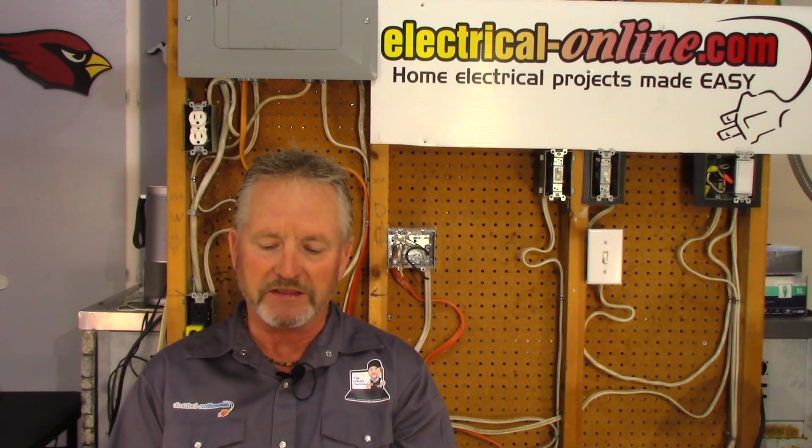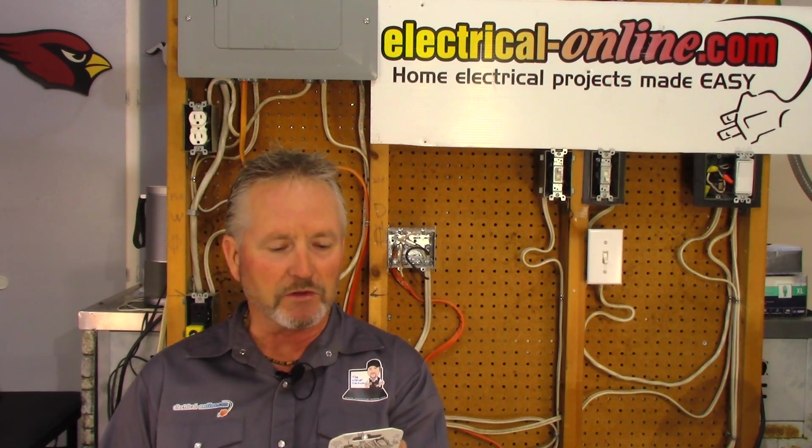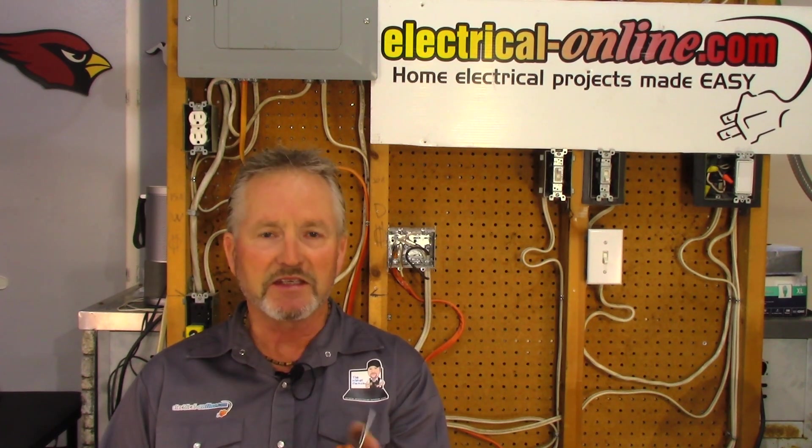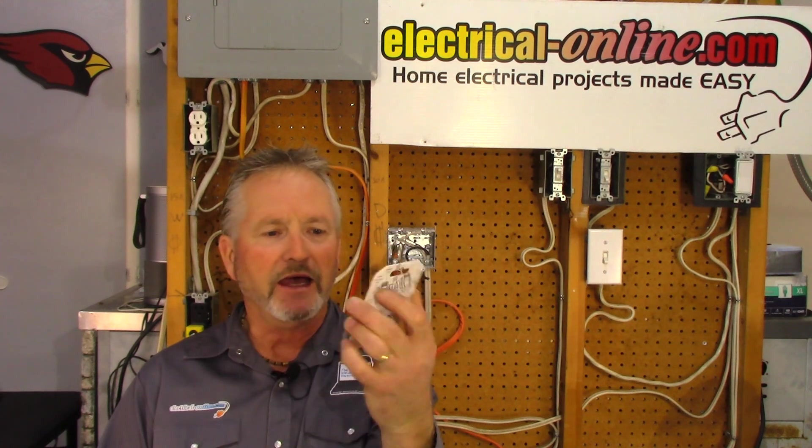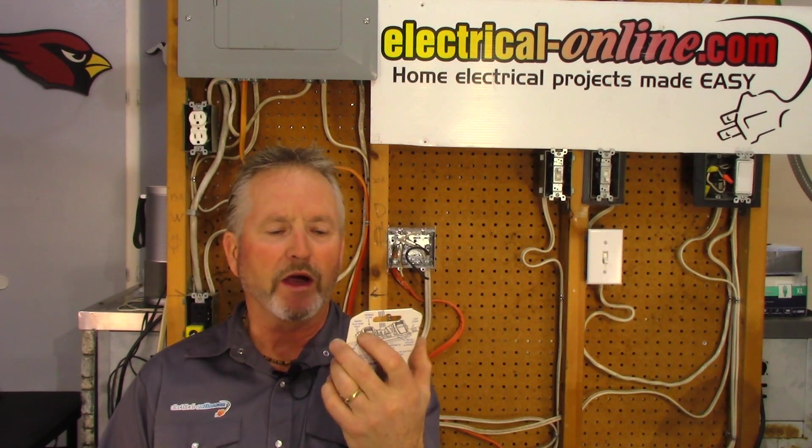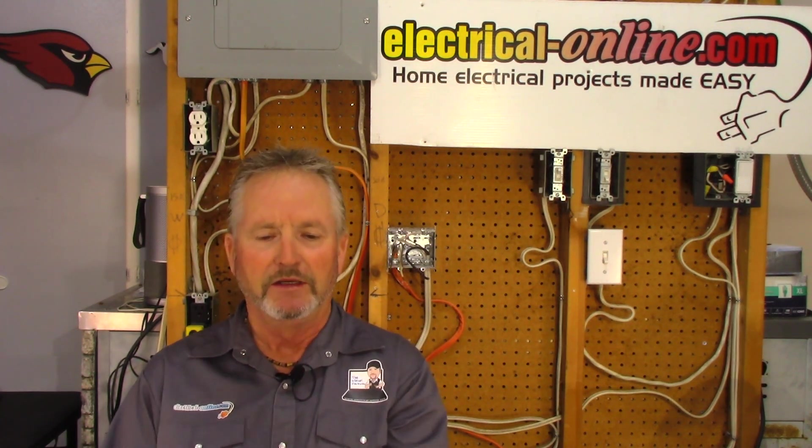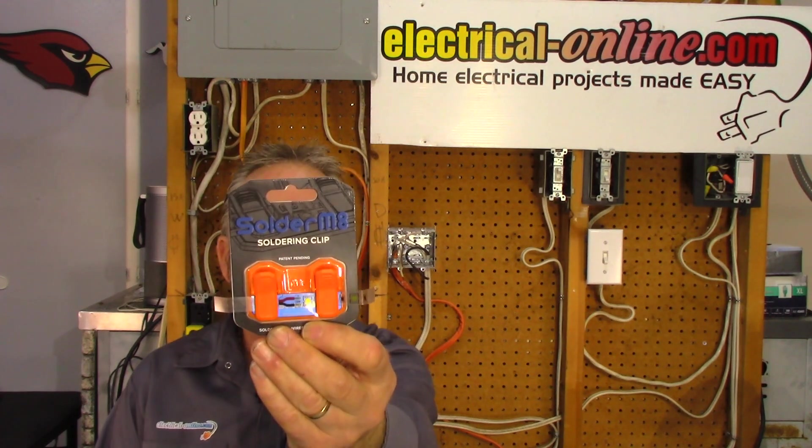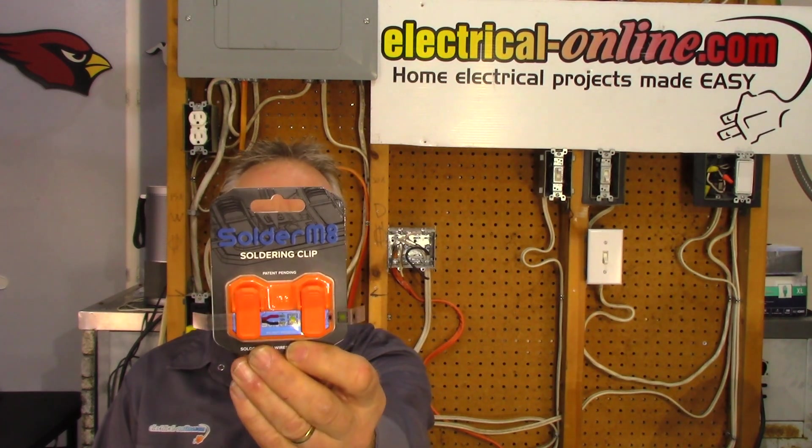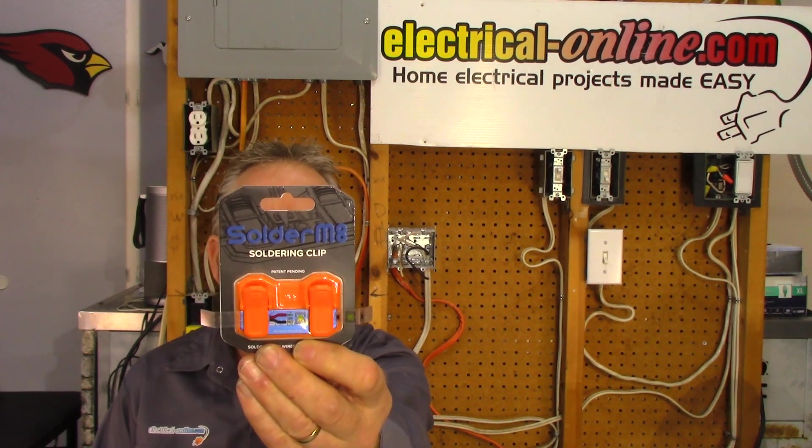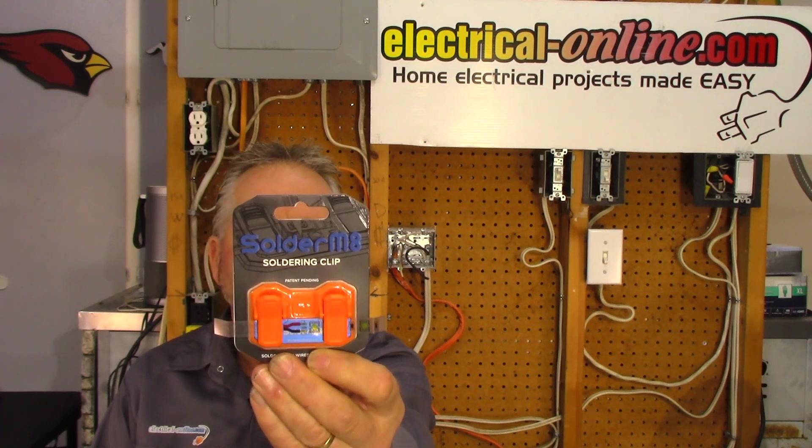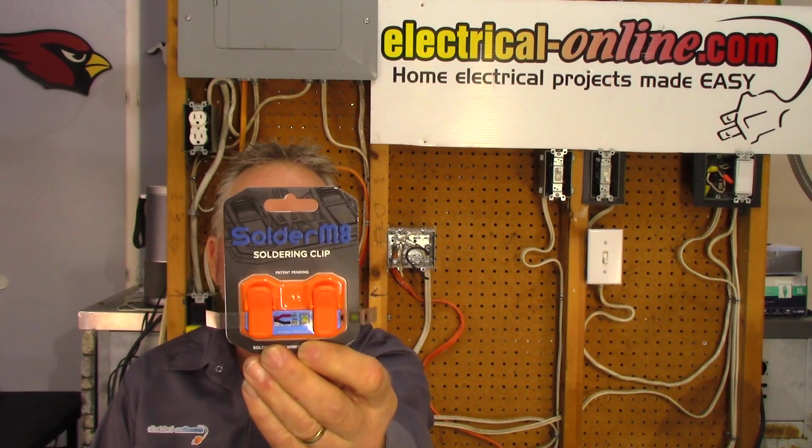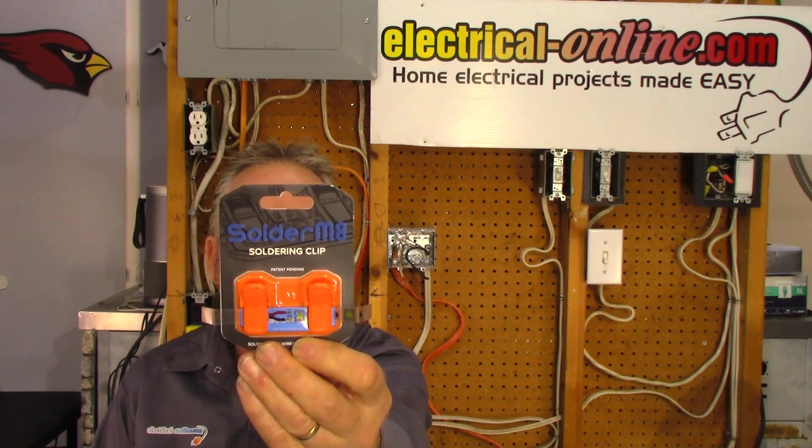It's called the Solder Mate - that's S-O-L-D-E-R-M-8, so a little play on words there. It's a soldering clip for soldering wires and LED strip. It's got spring clips to hold everything steady, nano suction feet, a magnetic base, and a metal solder surface.